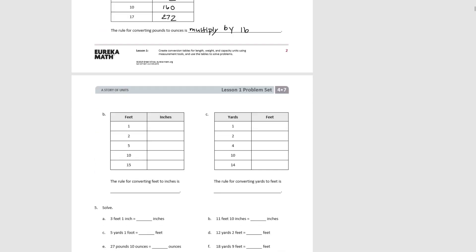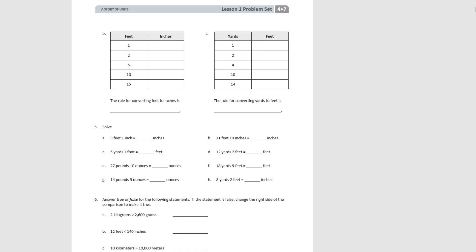Moving on to part B, converting from feet to inches. For 1 foot, that's 12 inches. 2 feet is 24 inches. 5 feet is 60 inches. 10 feet is 120 inches. And for 15 feet, 180 inches. The rule for converting from feet to inches is to multiply by 12.